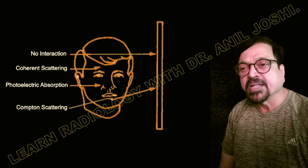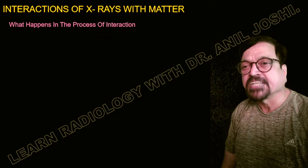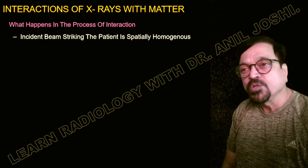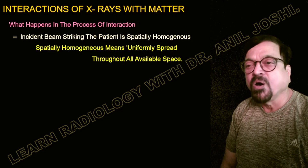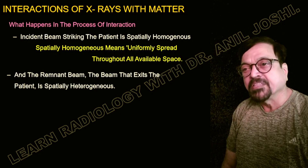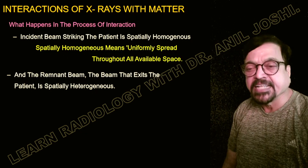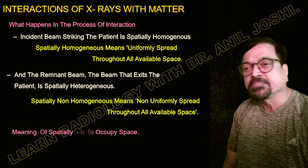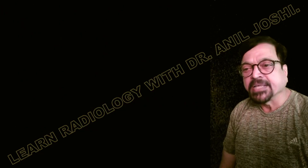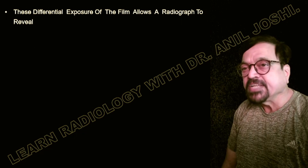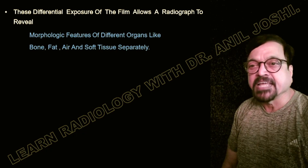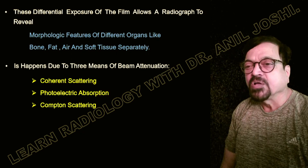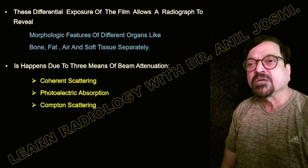The three processes are: no interaction, coherent scattering, photoelectric absorption, and Compton scattering. The incident beam striking the patient is spatially homogeneous — uniformly spread throughout the available surface. The remnant beam that exits the patient is spatially heterogeneous — non-uniformly spread. This differential exposure of the film allows the radiographer to reveal the morphological features of different organs like bone, fat, air, and soft tissue separately, due to these three modes of interaction.